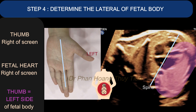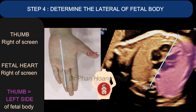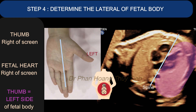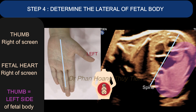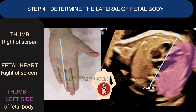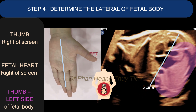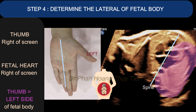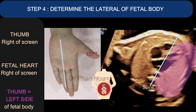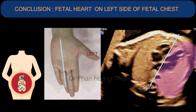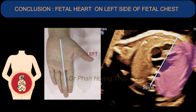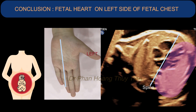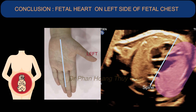You will notice that the thumb is on the right side of the screen. The fetal heart is also on the right side of the screen. Since the thumb always points to the fetal left side, this leads us to the conclusion that the fetal heart is on the left side of the fetal body.